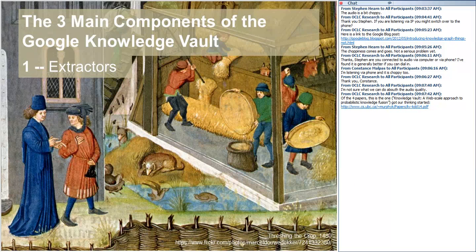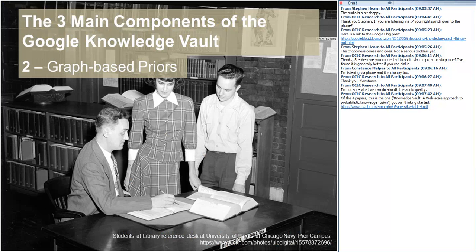The second main component Google researchers refer to as graph-based priors. They have knowledge bases — Freebase, Wikidata, and others — and these are systems that learn the prior probability of each triple and its uncertainty by looking it up in a knowledge base: do we know something about this already? It's a way of putting new information into context of what we already know. Knowledge bases grow over time, and many different knowledge bases might have conflicting claims, which is just more data to include in the calculation.